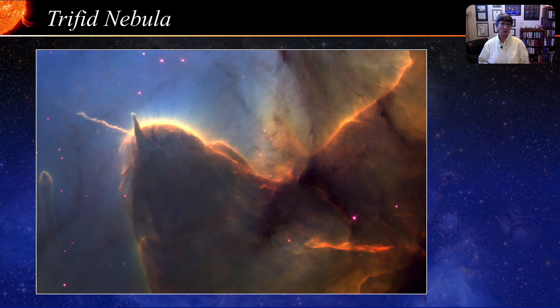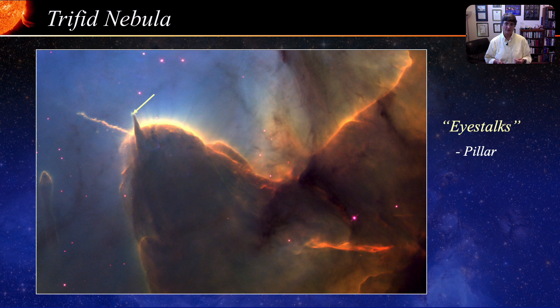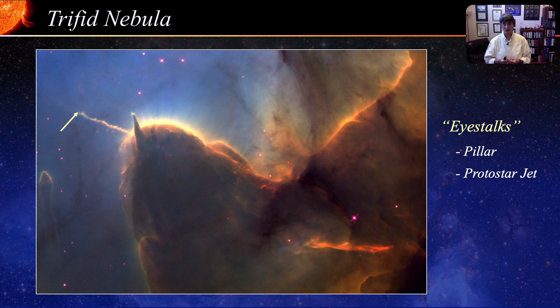Another animal-like formation is found in the Trifid Nebula — this looks like a snail's head. The eyestalks are very interesting: one of them is a regular pillar of gas and dust, while the other is half of a bipolar jet from a protostar. As material falls inward toward the core of a rotating protostar, some of the material gets ejected out along the axis of rotation, forming jets.